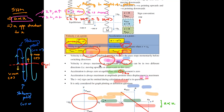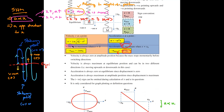Generally, the negative signs in the velocity and acceleration equations are omitted during calculations, as calculation questions are only interested in magnitude. However, if the question concerns graph plotting or definition questions, you must consider the negative signs.